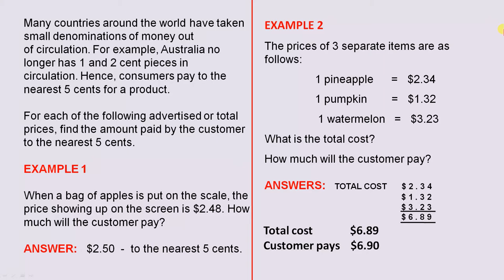Example 1. When a bag of apples is put on the scale, the price showing up on the screen is $2.48. How much will the customer pay? The answer is $2.50 to the nearest 5 cents.